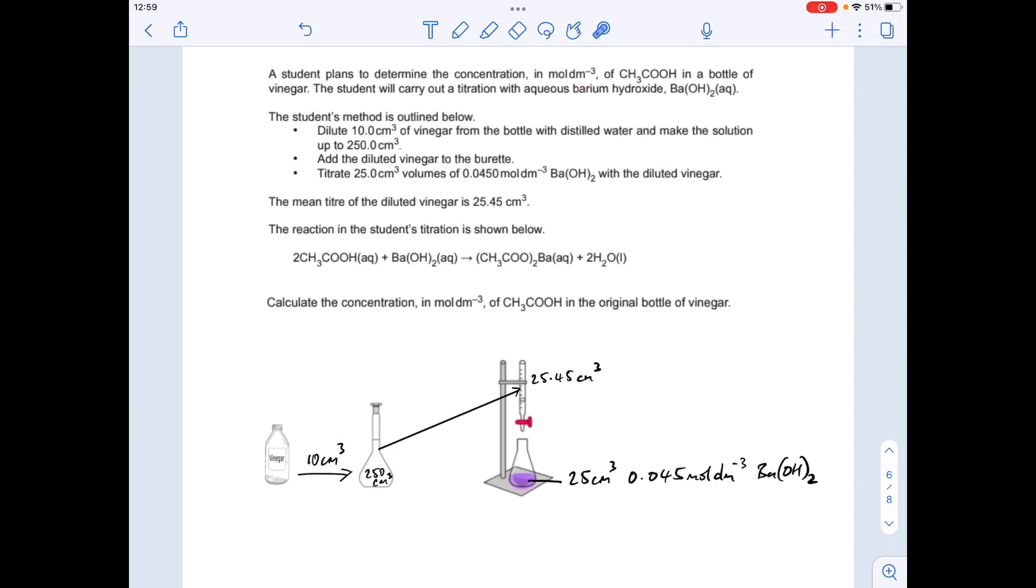So they've taken some vinegar, taken 10 centimeters cubed out, put it in this 250 cubic centimeter volumetric flask, so diluted it. Then it's gone into the burette and it's been titrated against 25 cm³ samples of that concentration barium hydroxide, and they found that the mean titre was 25.45 cm³.